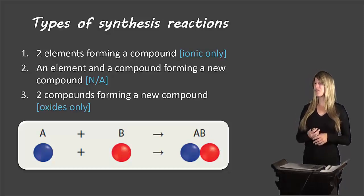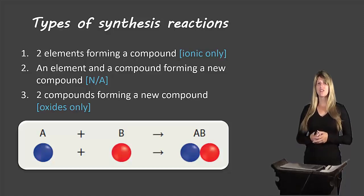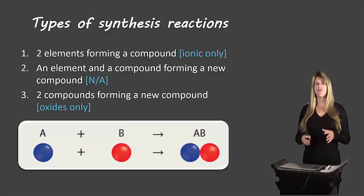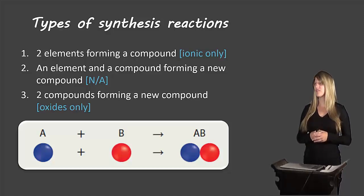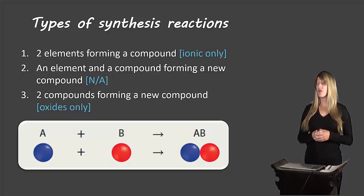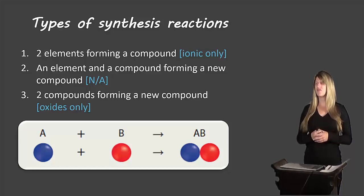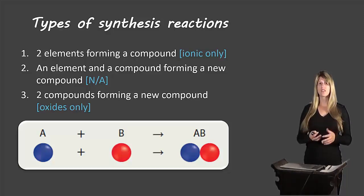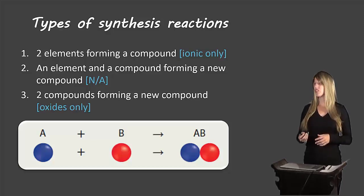The first type is when two elements form a compound, and we're only going to look at the case where ionic compounds are formed, not covalent compounds. The last type is when two compounds form a new compound, and we're only going to look at metal oxides and non-metal oxides.